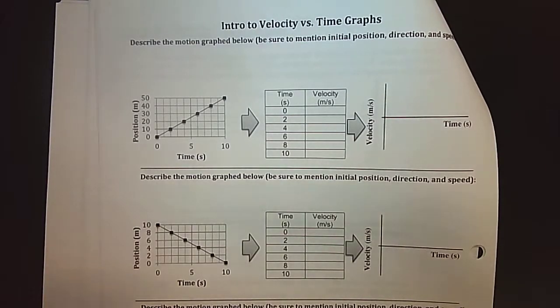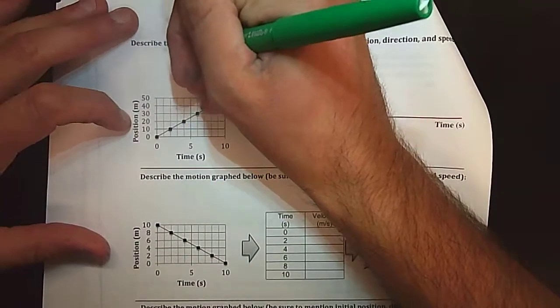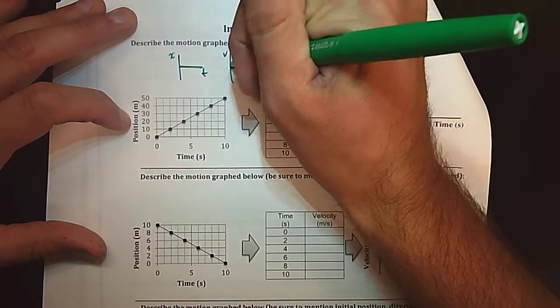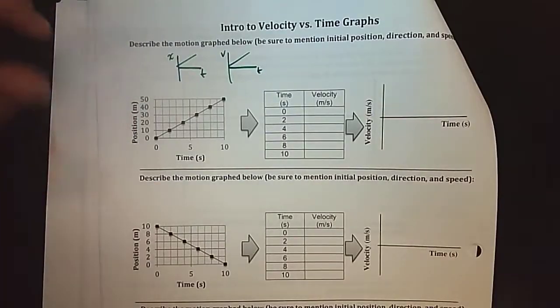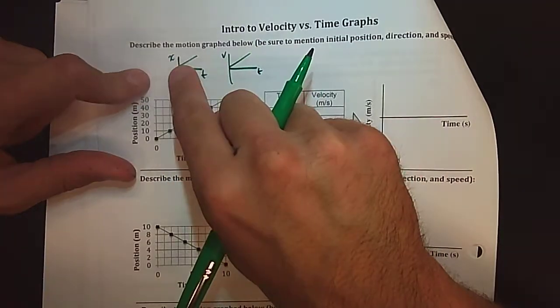So at this point we've only looked at position versus time graphs and there are other types of graphs as well. We could have velocity versus time graphs, and sometimes students will look at graphs like these and they'll all see the same thing. Your brain naturally goes to look at the pattern, right? We see this line going up.